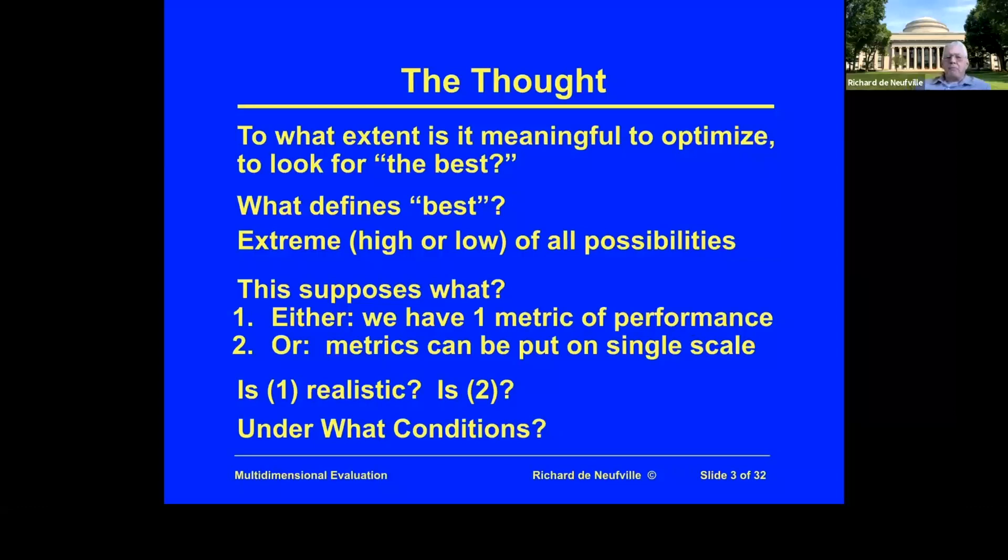Let's think about what is meaningful to optimize in the sense of having a mathematical search for the best. What defines best? As we know, it's the extreme—the high or the low—of all possibilities. To be able to know whether you're the highest or lowest, you have to have a metric of performance. If I'm looking at altitude, I can calculate something is at a thousand feet, two thousand feet, three thousand feet, and I can know which one is the highest. Let's say it's Mount Everest.